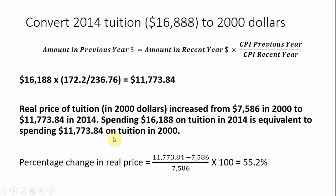Another way of thinking about this: spending $16,188 on tuition in 2014 is equivalent to spending $11,773 on tuition in 2000. If we wanted to look at the percentage change, comparing $7,586 in expenditures in 2000 to $11,773.84, it's still a 55% increase in the real price of tuition. This is the same story we saw by looking at the conversion in a slightly different manner.